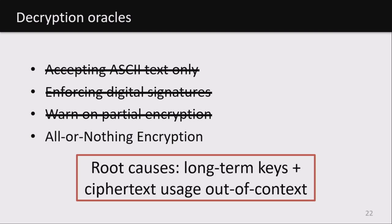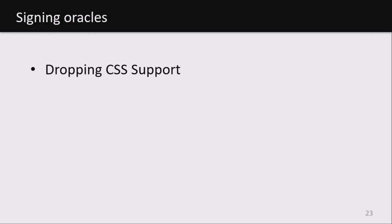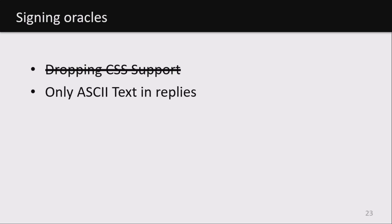We could also think about cryptographic countermeasures: why is it even possible to use a ciphertext from one email and years later use it in a completely different context? Modern online protocols bind the ciphertext to the current communication session, but in email this still seems hard to do. Regarding signatures, you may say let's drop support for CSS — I'm on your side — but unfortunately a lot of people want fancy formatting done via CSS, so it may not be realistic for many email clients. At minimum, email client implementers can reply with ASCII text only or remove CSS styles from replies, so they cannot be misused as signing oracles anymore.